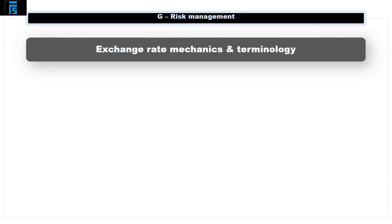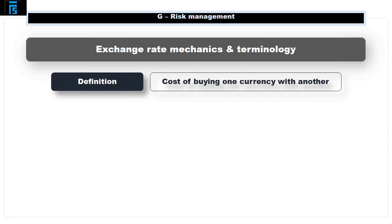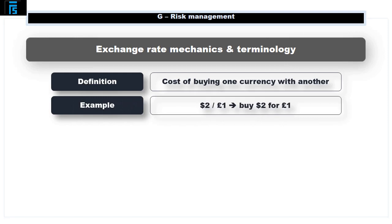Exchange rate mechanics and terminology. An exchange rate is effectively the cost of buying one currency with another. For example, a rate of two dollars to the pound indicates that if you have one pound, you can use it to buy two dollars, notwithstanding any transaction costs. You have exchanged your pounds for dollars. The same relationship could be expressed as 0.5 pounds to one dollar. Either way, the rate at which the currency could be exchanged now is referred to as the spot rate, or spot.